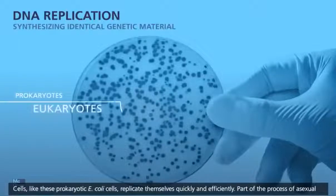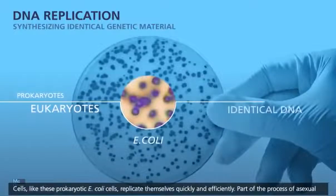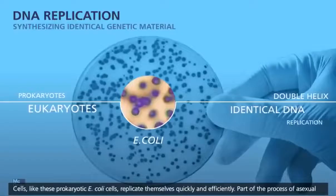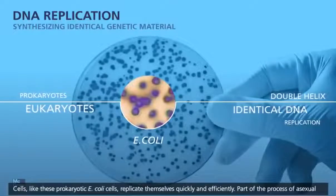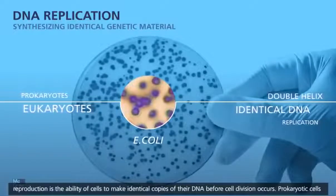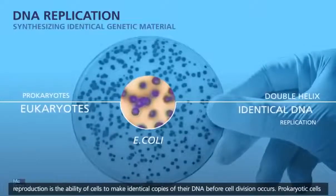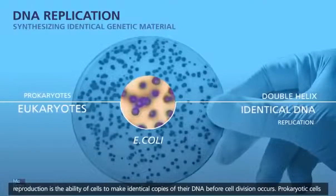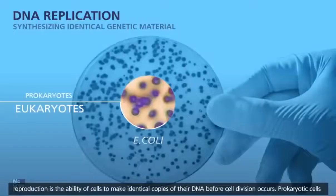Cells like these prokaryotic E. coli cells replicate themselves quickly and efficiently. Part of the process of asexual reproduction is the ability of cells to make identical copies of their DNA before cell division occurs.